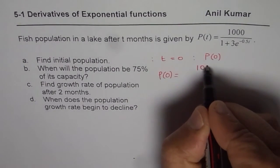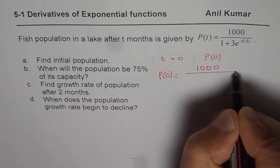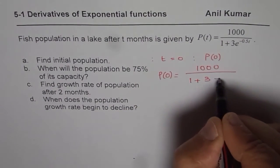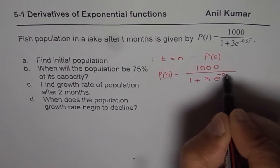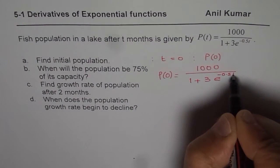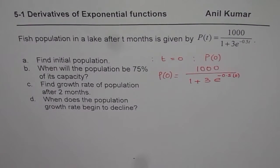So what we get here is 1000 divided by 1 plus 3 times e to the power of minus 0.5t. And t is 0, so I am writing 0 for that.